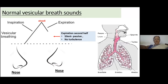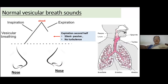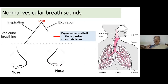Inspiration is an active process — you decrease the intrathoracic pressure by expanding the chest and suck air in. So inspiration produces turbulence and you hear it well. Whereas expiration is a passive collapse of the lung. The air is not being forced out of the chest — it's just meandering its way out. So expiration is not heard because there is no turbulence during passive expiration.